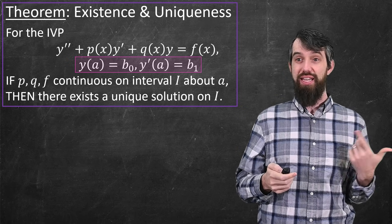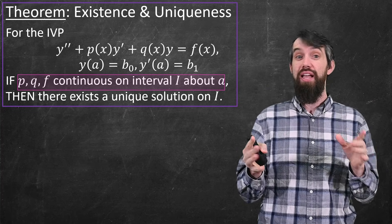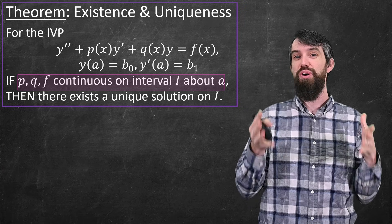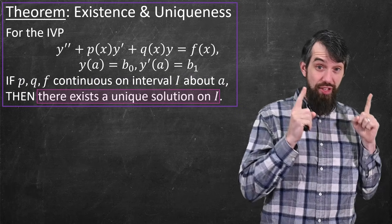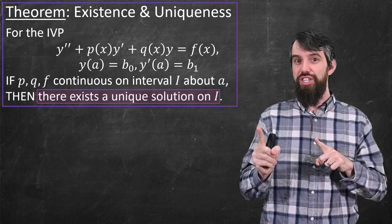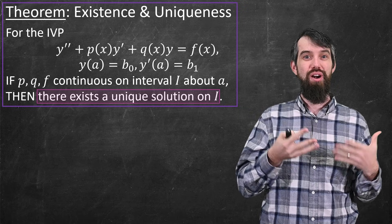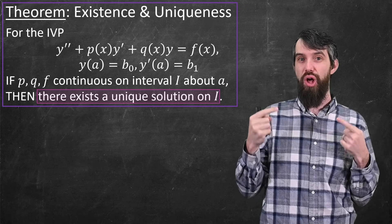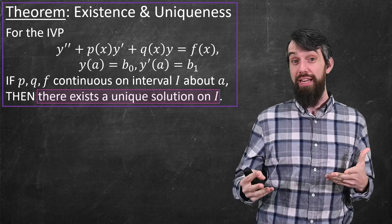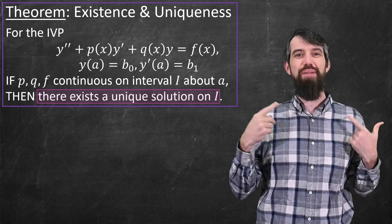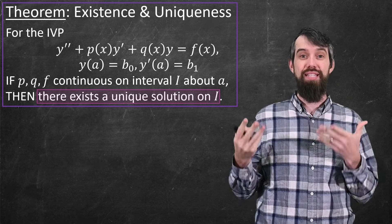The conditions require that p, q, and f are all continuous on some interval containing a — the point where the initial conditions are specified. The conclusion is that you then get a unique solution that both exists and is unique on that same interval i. If p, q, and f are continuous on i, then the unique solution also exists on i.